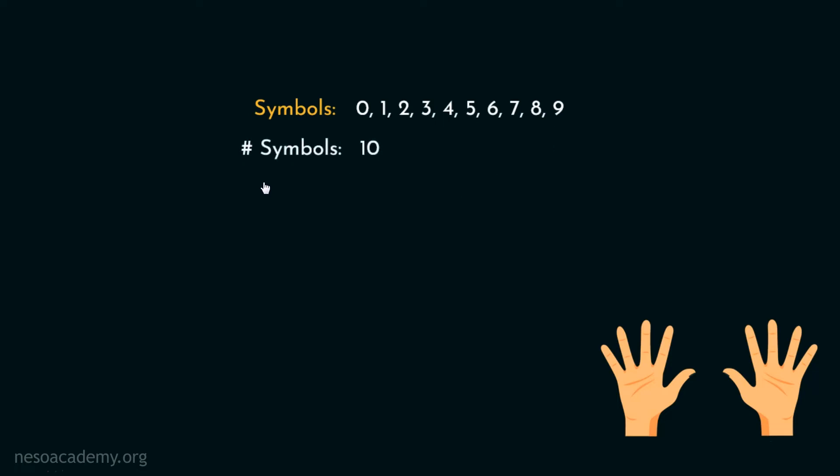Now we already know the number of symbols used in a number system is called the base of it, right? And since the base is 10, this number system is called the decimal number system. Now, let's observe how do we count in this number system.